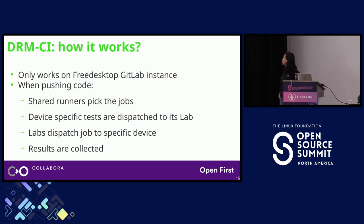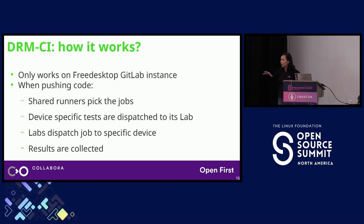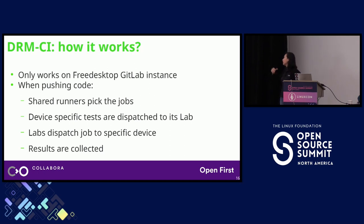So how DRM CI works: at this moment it only works with the Freedesktop GitLab instance, but anyone is free to create an account there and execute DRM CI. When you push code to a repository there, the infrastructure provides shared machines called runners that pick your jobs and execute them. Those runners are shared across all projects inside Freedesktop. For device-specific tests, they are dispatched to the corresponding lab that hosts those devices, which dispatches the job to the specific device. The results are collected and displayed in the GitLab interface.